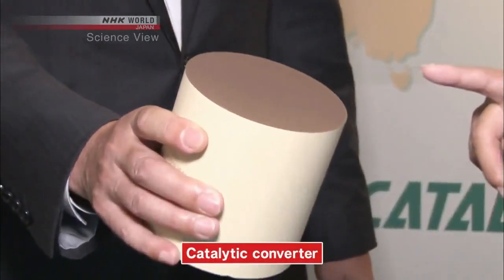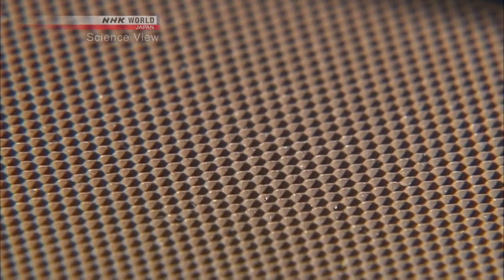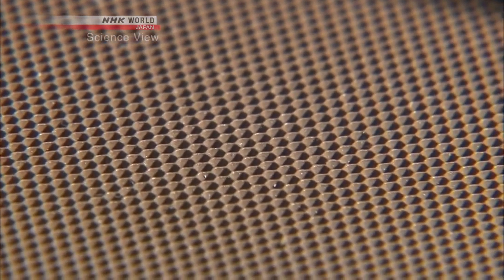Hi, I'm Michelle. As I went on to ask what they're making, I was shown this cylindrical object. It is called a catalytic converter. It has numerous tiny holes on its cross-section, and how it is used in cars is like this.